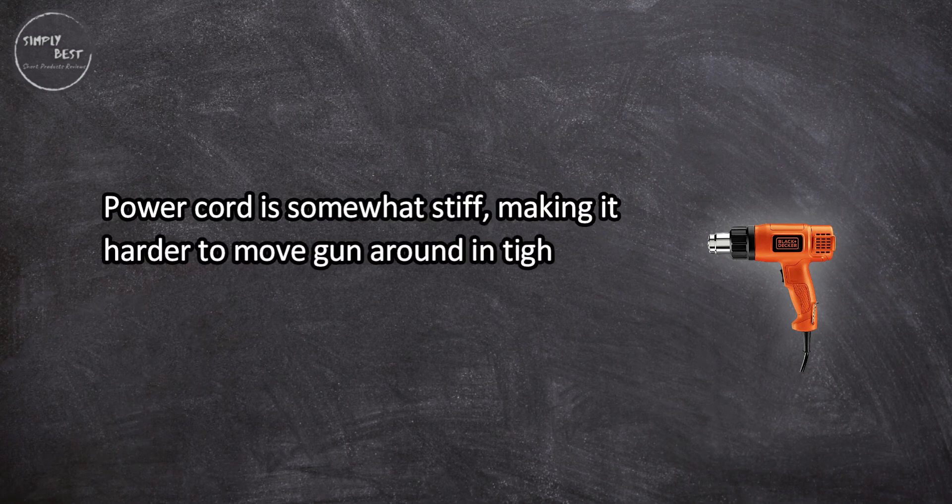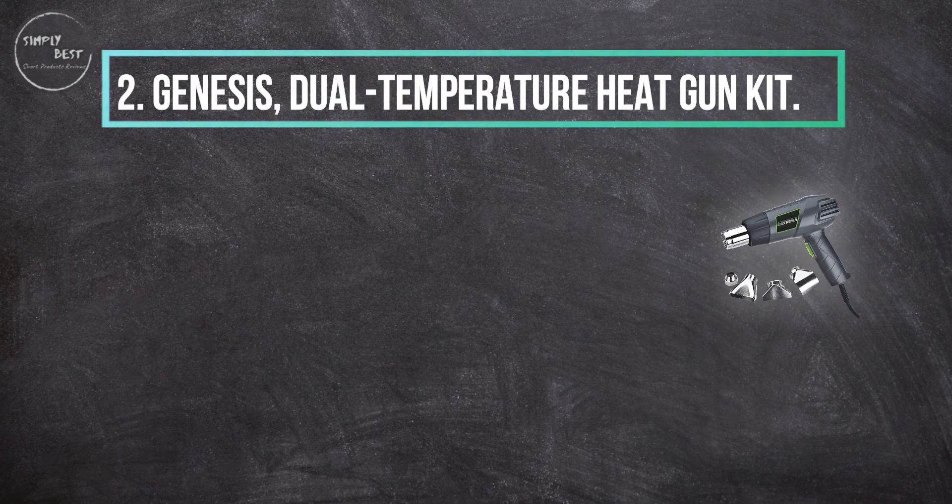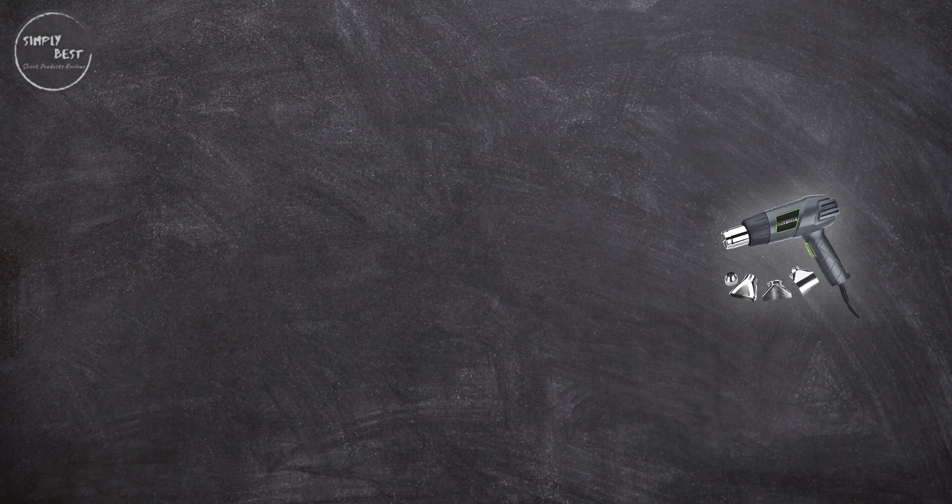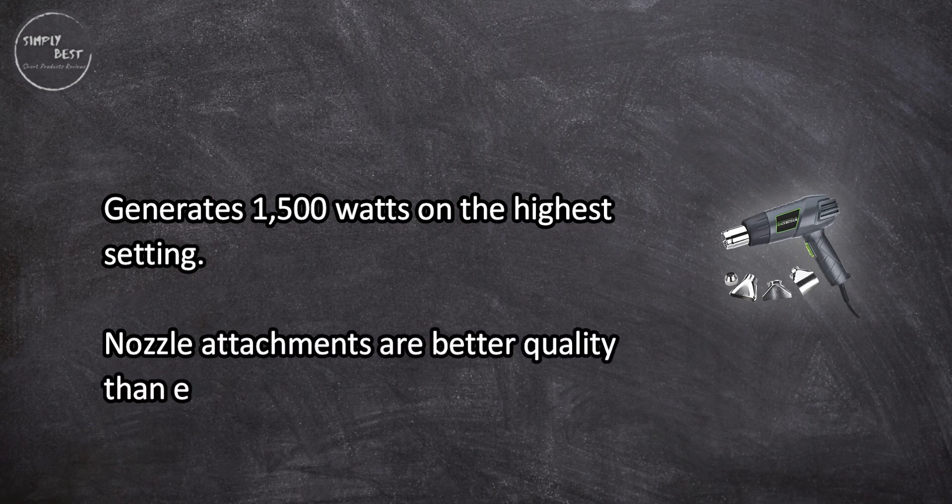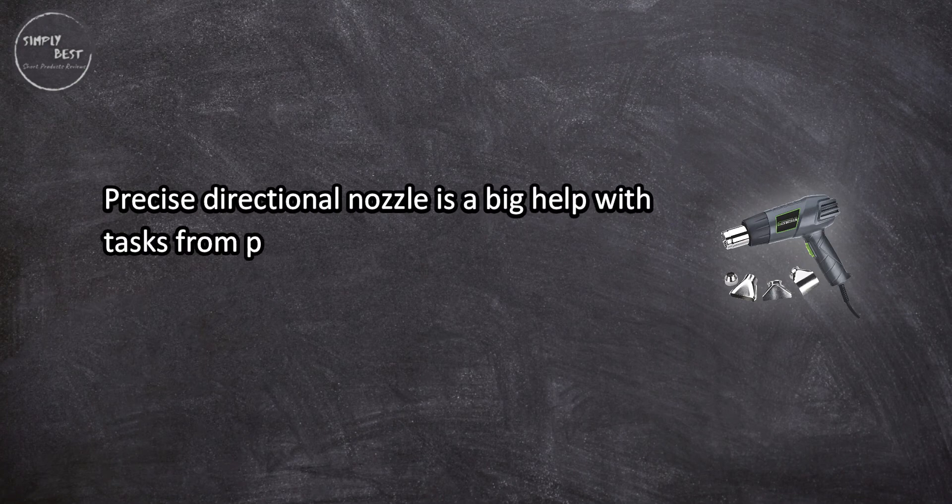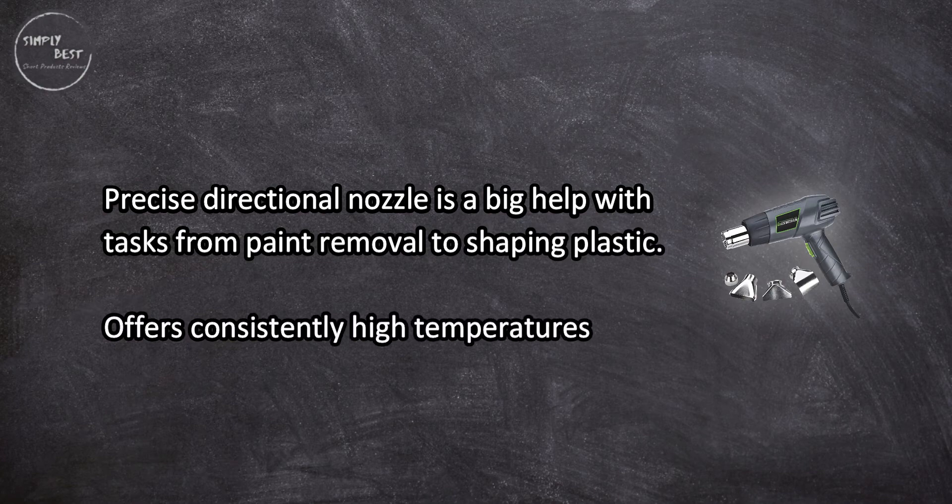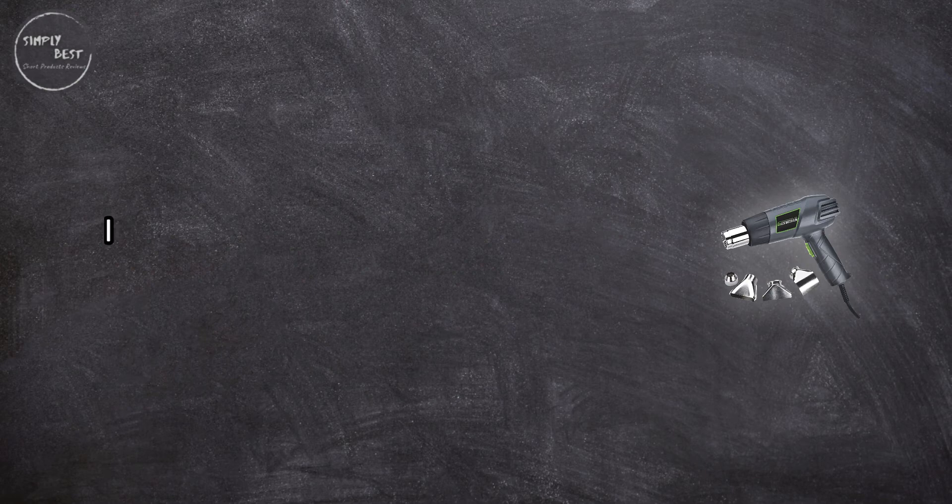At number two, Genesis dual temperature heat gun kit. Generates 1,500 watts on the highest setting. Nozzle attachments are better quality than expected in this price range. Precise directional nozzle is a big help with tasks from paint removal to shaping plastic. Offers consistently high temperatures and good control for detailed work. Its lifespan can be fairly short, but for occasional tasks users are happy with this unit.